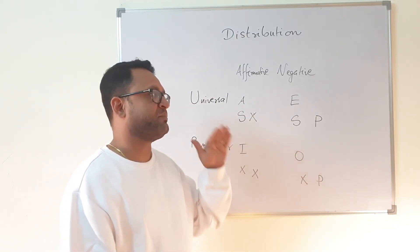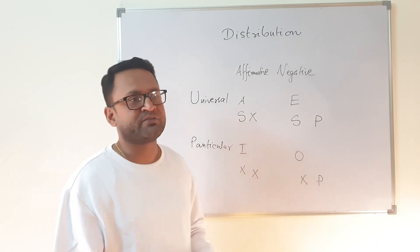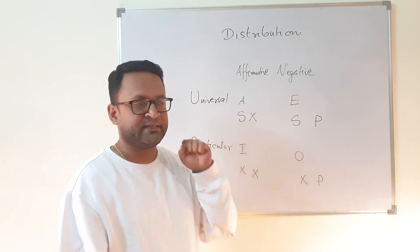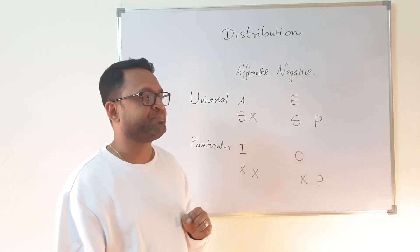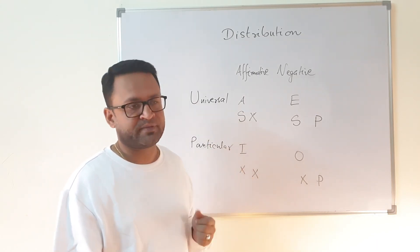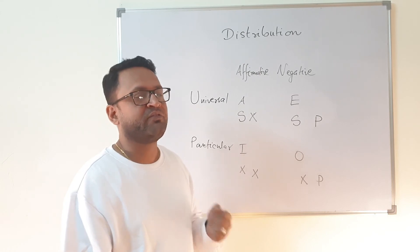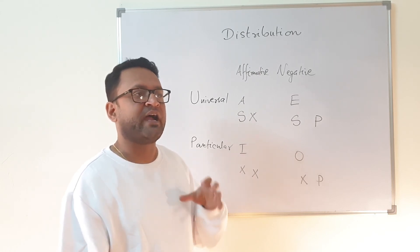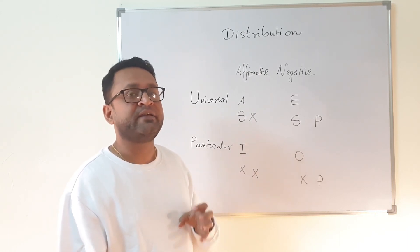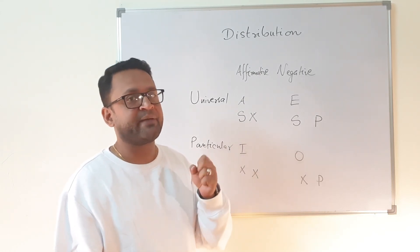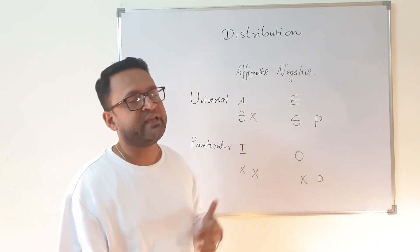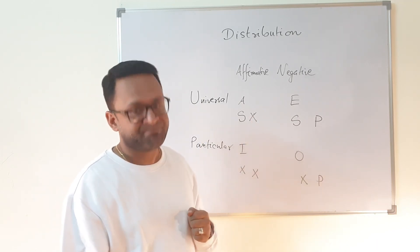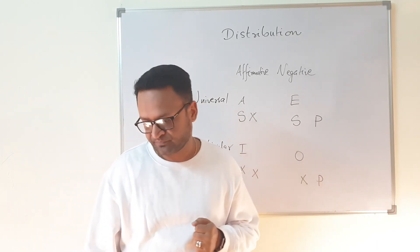This was about categorical propositions and distribution. In the next lecture, we will understand the Venn diagrams of these terms and how they will be used at a later stage. Thank you.